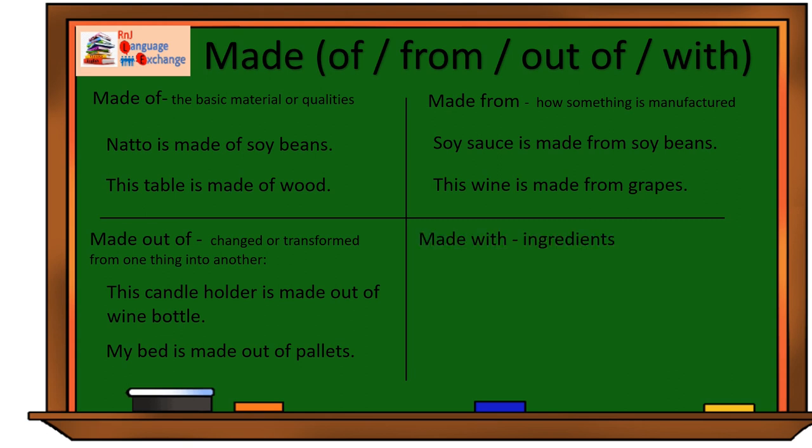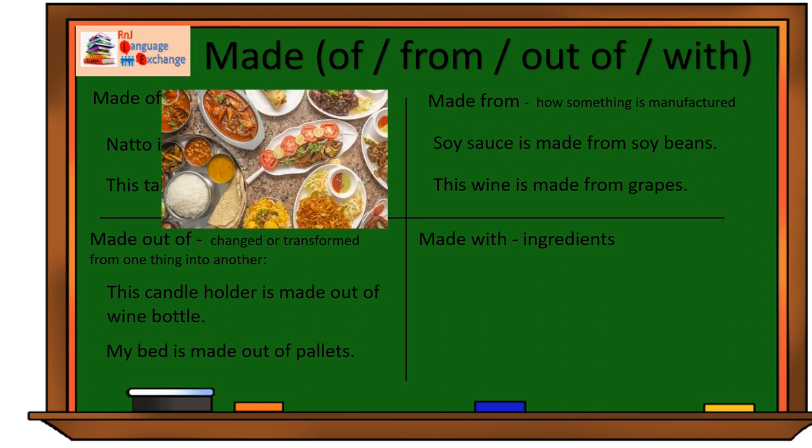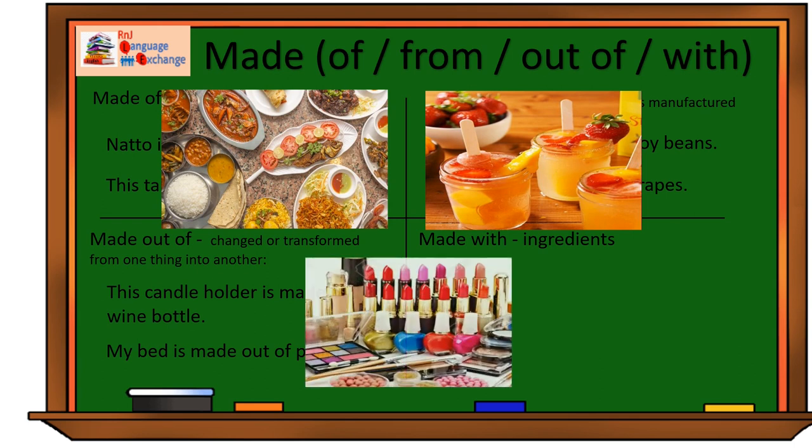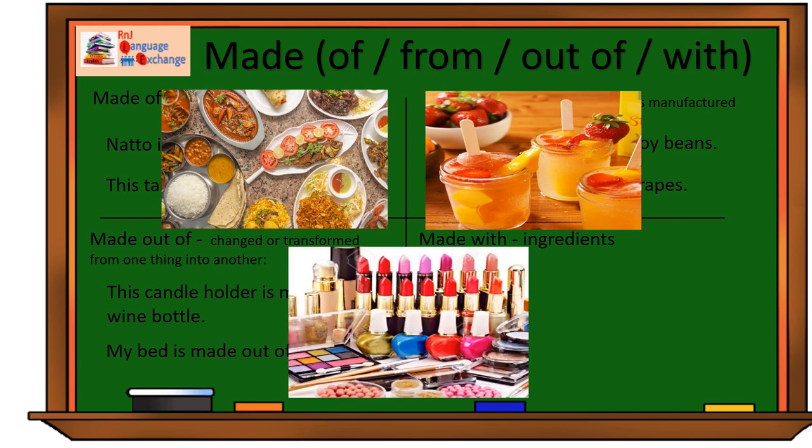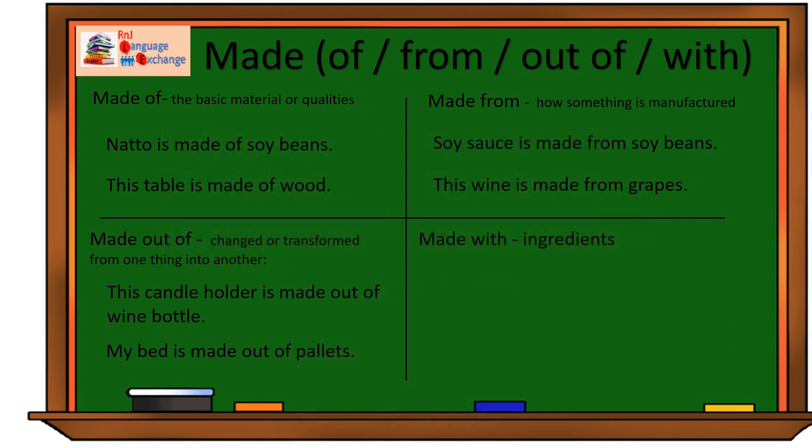If made from and made out of are a bit confusing, let's take a look at something really easy. Made with. Made with is used when we talk about ingredients of food or drinks or even cosmetics. Anything as long as we are talking about the ingredients used to make something.